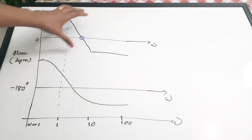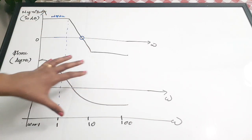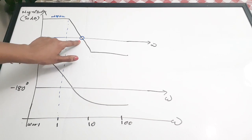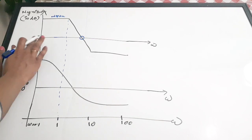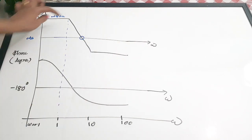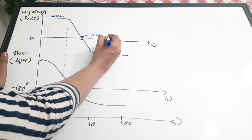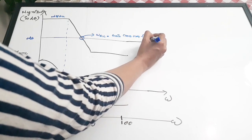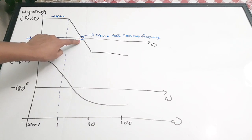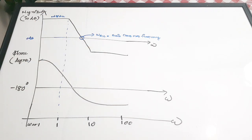We mark the gain on the magnitude plot, while phase is marked on the phase plot. At some frequency omega, the gain graph crosses the 0 dB reference line. That frequency is called the gain crossover frequency, WGC.